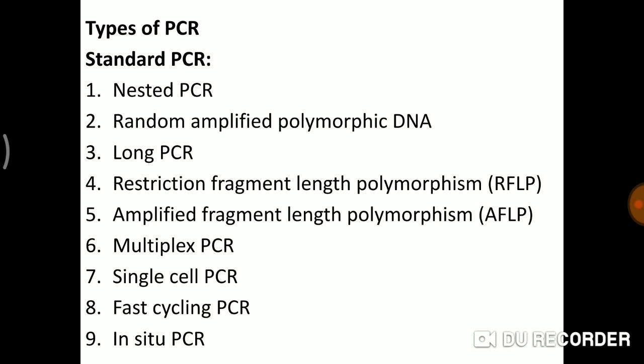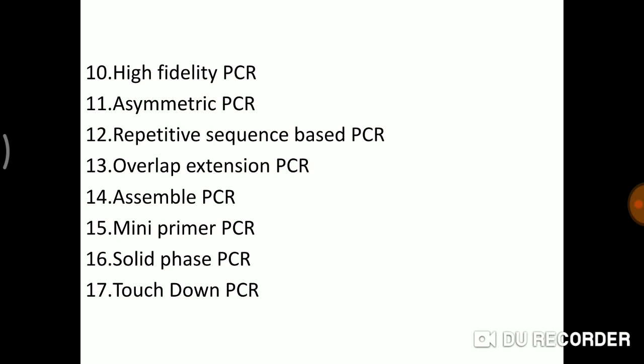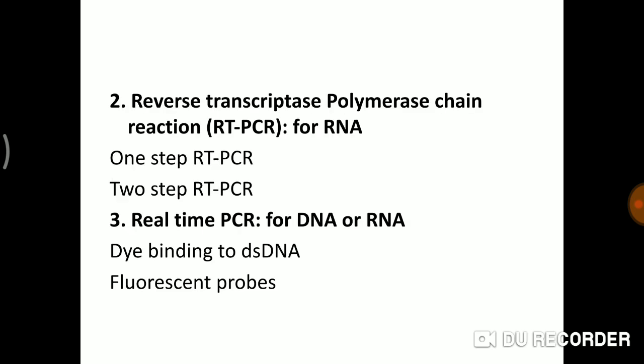Another technique is Random Amplified Polymorphic DNA (RAPD), which is a type of PCR where the segment of DNA to be amplified is selected randomly — so it is random amplification of the desired segment. Another type involves RNA, carried out by reverse transcriptase enzyme — this is RT-PCR, which can be one-step or two-step RT-PCR. Real-time PCR uses fluorescent probes; it is also known as probe-based PCR or quantitative PCR (qPCR), which relies on sequence-specific detection of a desired PCR product.